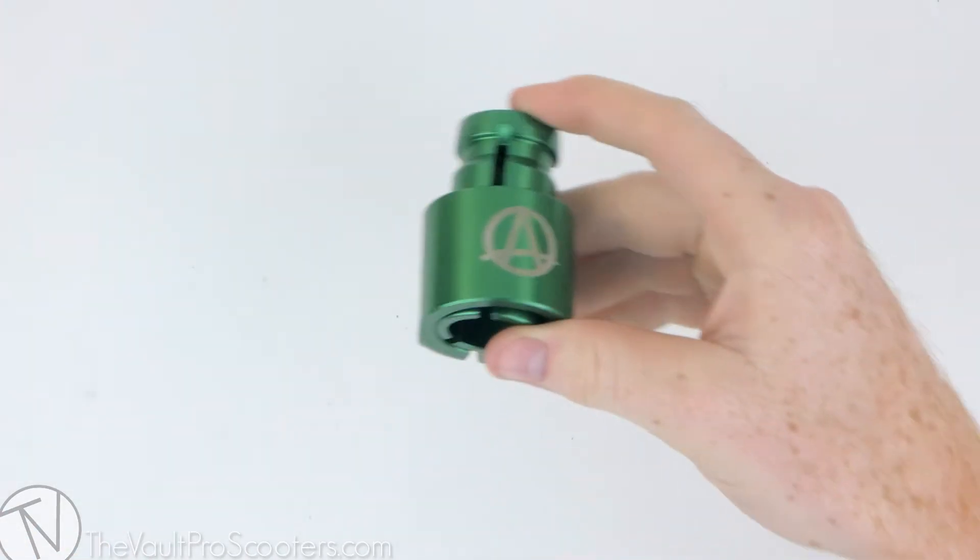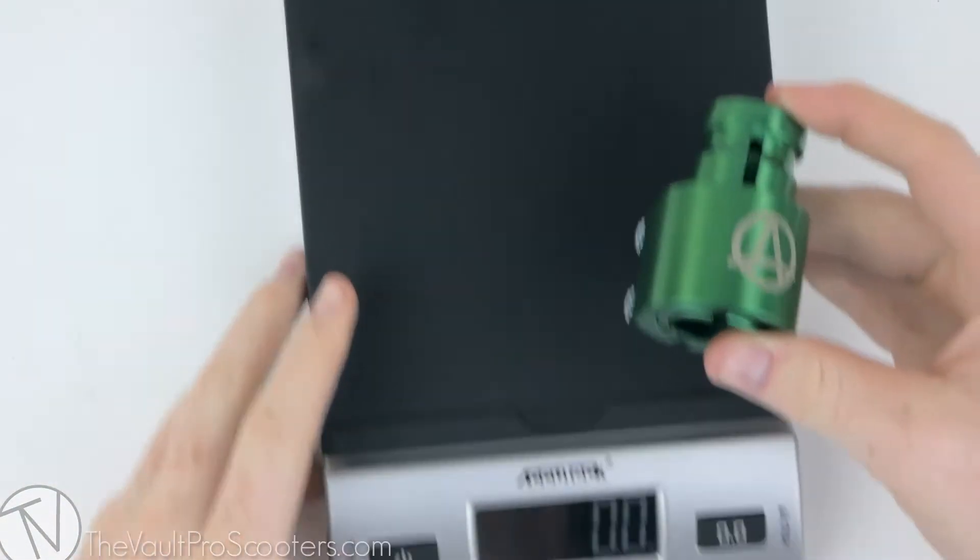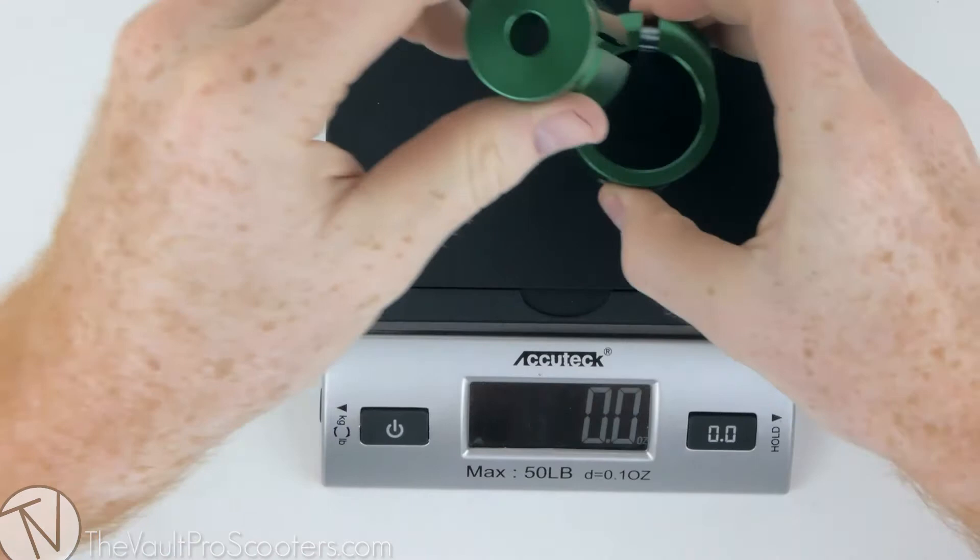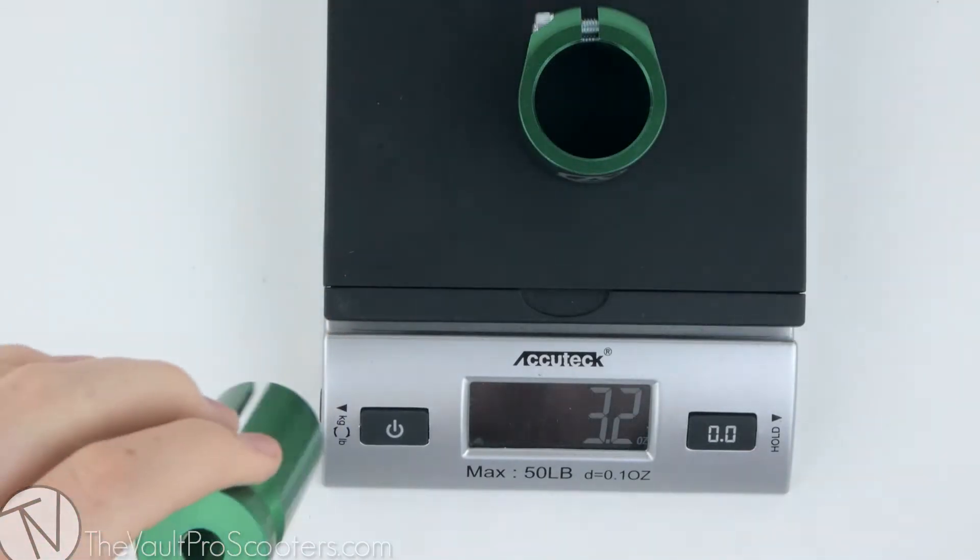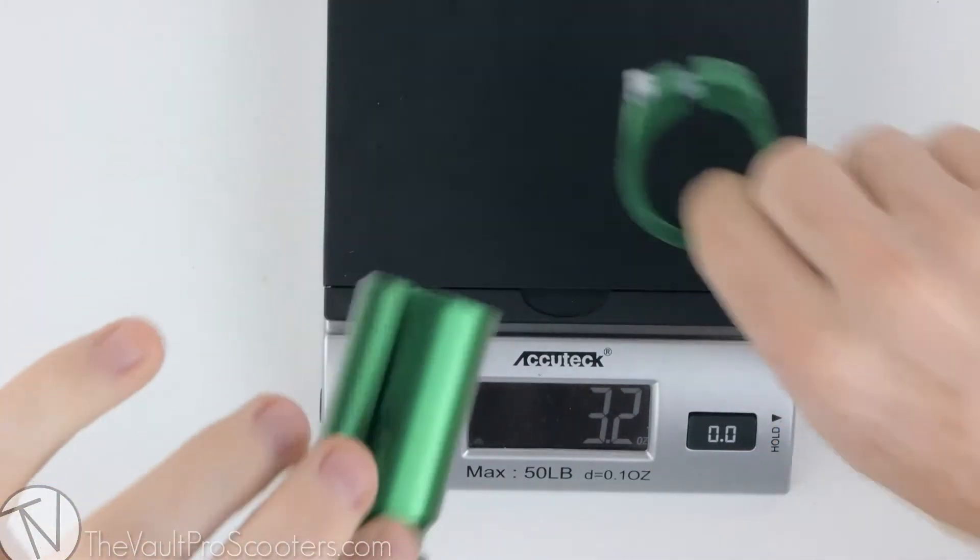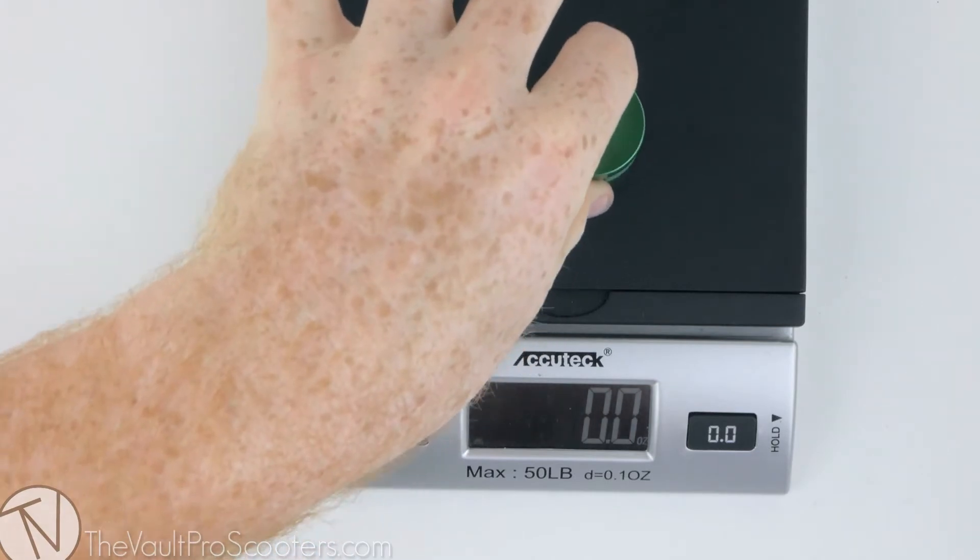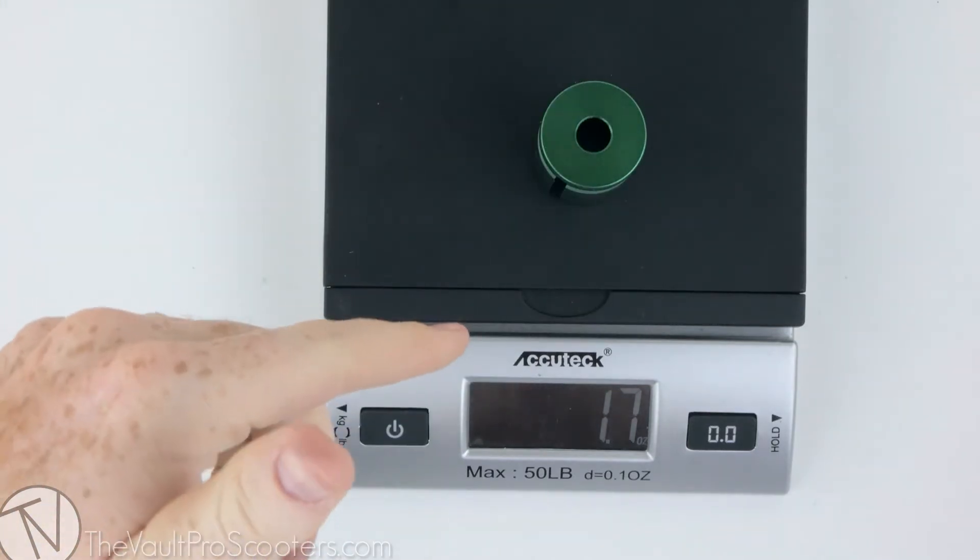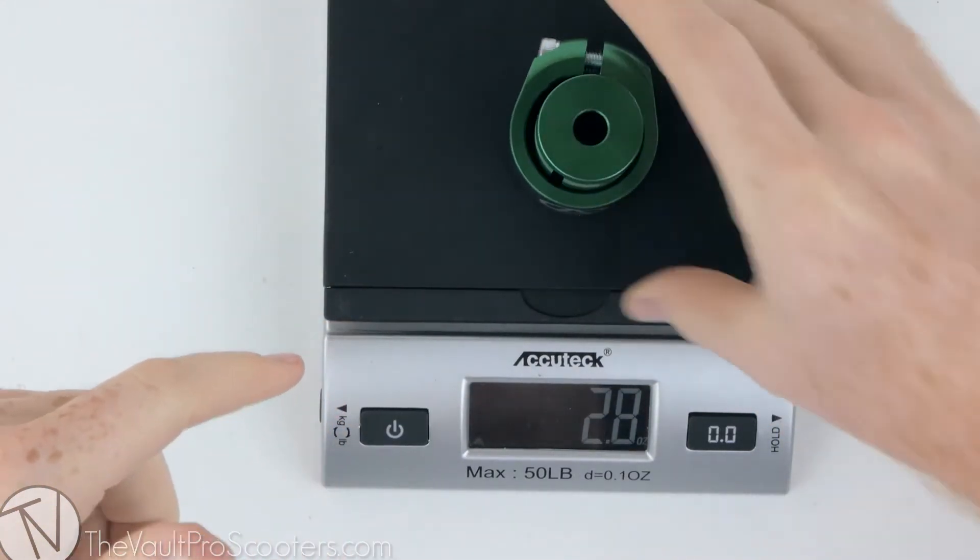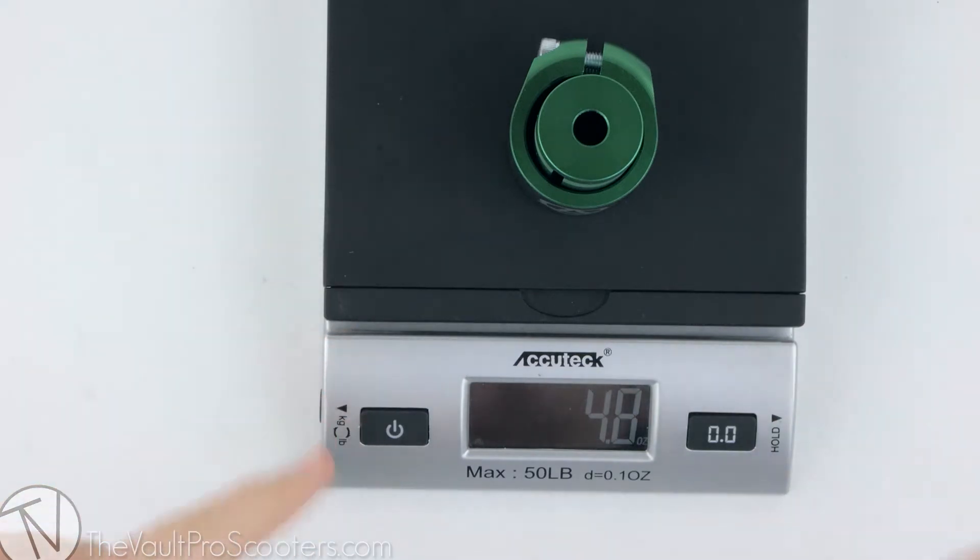And last but not least, let's go ahead and weigh this thing out. See how much it weighs. Let's go ahead and do the Apex double clamp first. That guy weighs 3.2 ounces and let's do this IHC to HIC shim. 1.7 ounces. Add that together and you get 4.8 ounces.